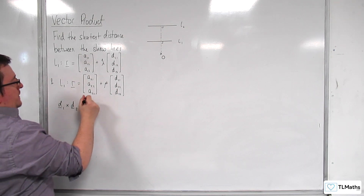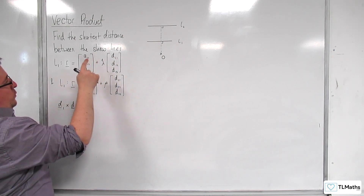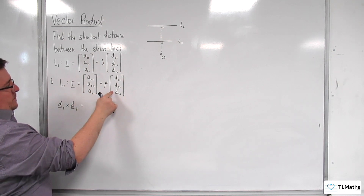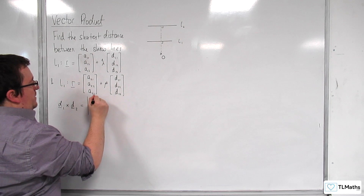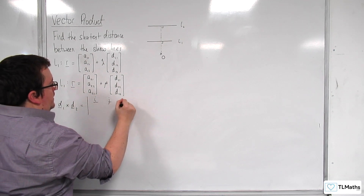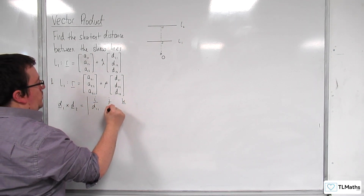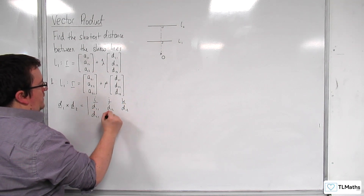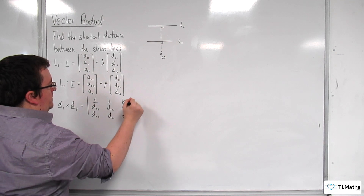D1 will be the direction vector for line 1, and D2 will be the direction vector for line 2. So this is the determinant of I, J, K with D11, D12, D13 on the second row and D21, D22, D23 on the third row.